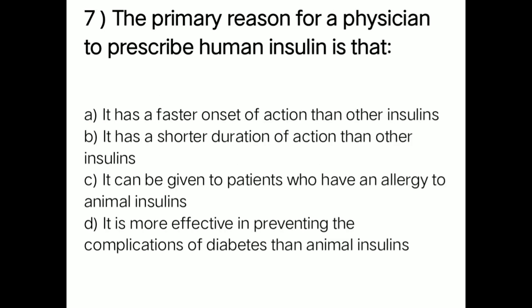Next question: the primary reason for a physician to prescribe human insulin is — option A: faster onset of action; option B: shorter duration of action; option C: it can be given to patients who have an allergy to animal insulin; option D: more effective in preventing complications of diabetes than animal insulin. Right answer is option C — it can be given to patients who have an allergy to animal insulin.